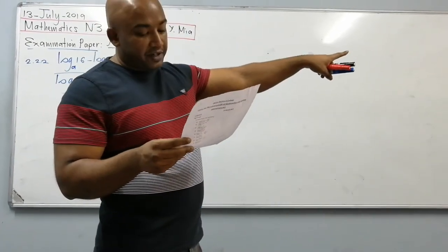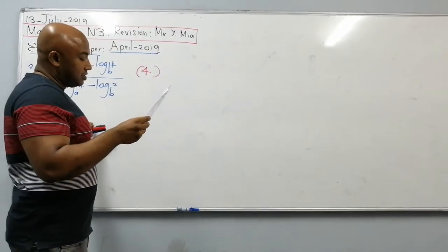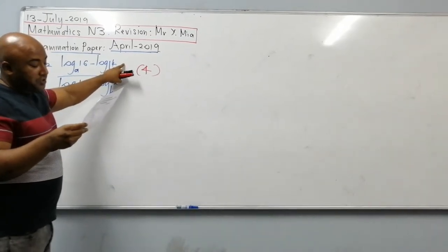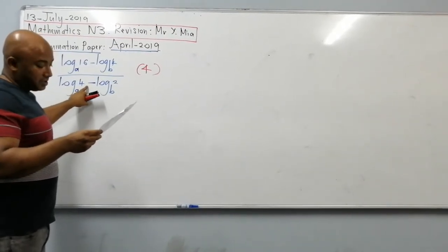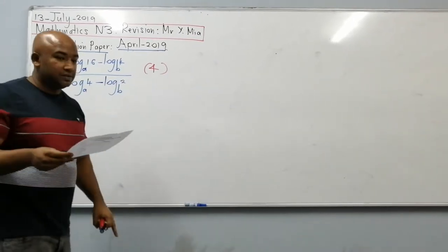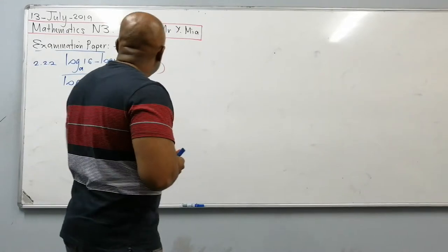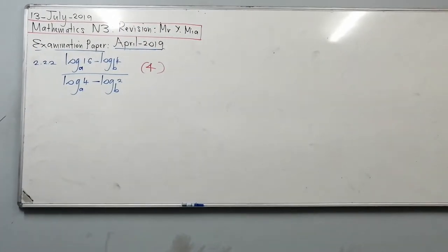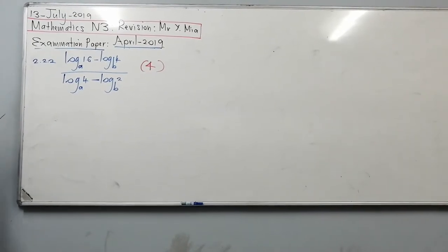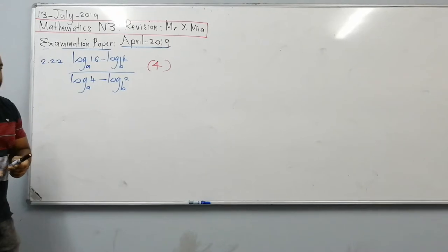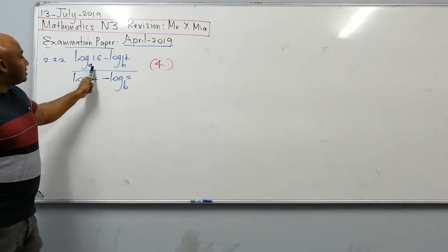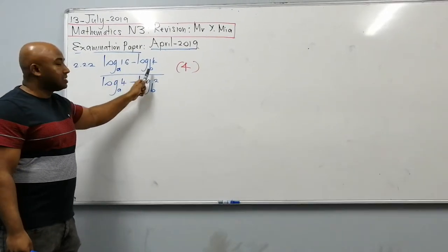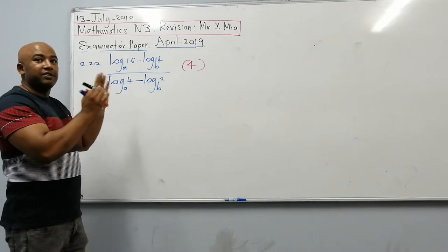Example 2.2.2, simplify: log 16 to the base a, minus log 4 to the base b, divided by log 4 to the base a, minus log 2 to the base b. This one is 4 marks. The bases are not the same — if the bases are not the same, you cannot combine the logs; only when the bases are the same can you combine them.